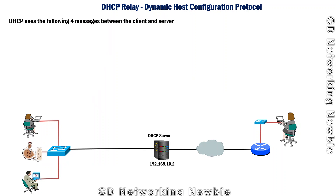Hi everyone. In this video we are going to discuss DHCP relay. We discussed DHCP in our previous video. DHCP stands for Dynamic Host Configuration Protocol and is used when client machines need an IP address to be part of a network. For that, we have a dedicated machine known as a DHCP server, which sends an IP address to the client upon receiving a request.